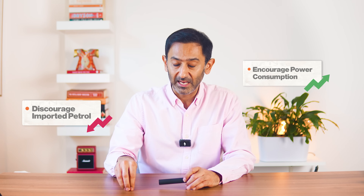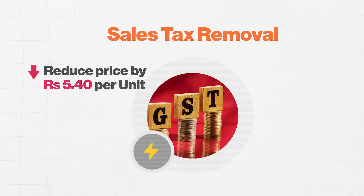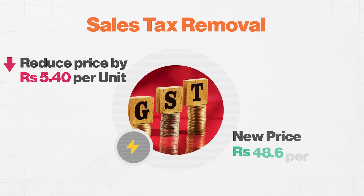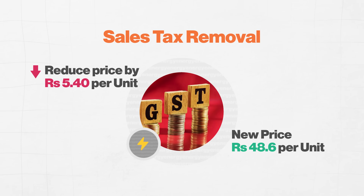Either way, as an economy, we have to discourage imported petrol consumption and increase power demand. If we do this, it will have a neutral impact on the federal budget, but the electricity bill will be reduced by Rs.5.40 per unit. The new price will then rise — coming down to Rs.48.60 per unit.